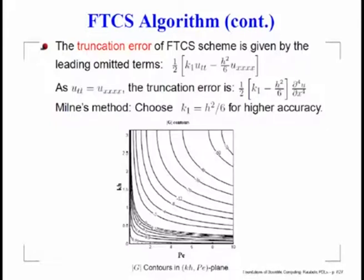This is called Milne's method. The consequence is that the Peclet number should be P = k₁/h² = 1/6. If we keep the Peclet number less than 1/6, we not only get a solution that monotonically decays, but also a more accurate solution. We can represent this behavior by plotting G contours in the Peclet number vs. kh plane.